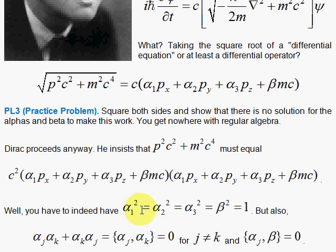We have to have the alpha 1 squared equal 1, and we have to have each of these also equal the 1 when squared. And you have to have anti-commutation being 0. Well, these are matrices. In other words, by taking the square root of a differential operator, Dirac, it's matrices. That's going to make it work.